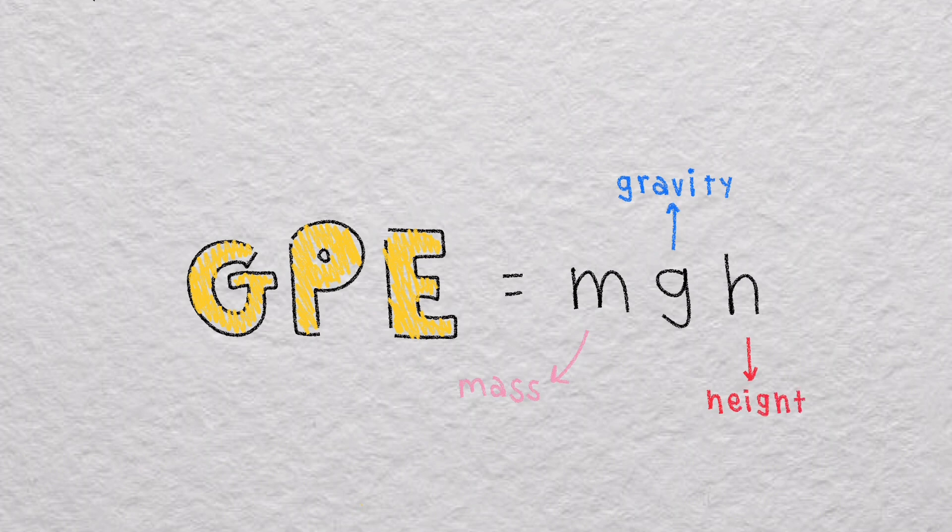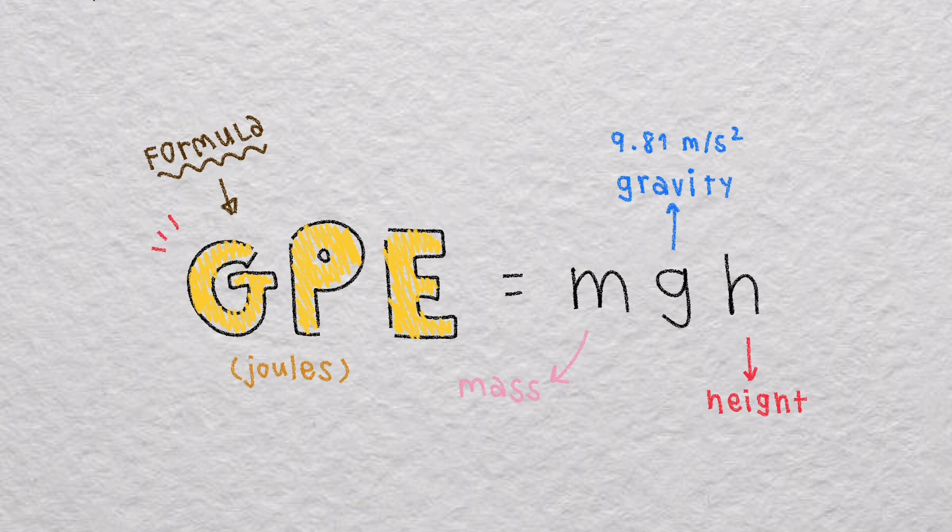So here is the gravitational potential energy formula: GPE equals mgh. The m is for mass, the g is for gravity, the h is for height, and the GPE value is joules. And remember that gravity is equal to 9.81 meters per second squared.